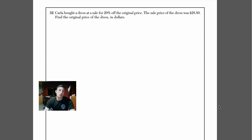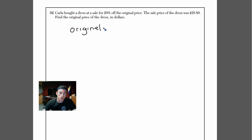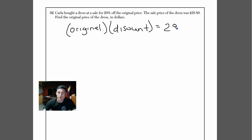Number 32 says: Parla bought a dress at a sale for 20% off the original price. The sale price of the dress was $28.80. Find the original price. This one is a bit different because the discount was already applied and now we have to find the original price. We can write it as: original price times the discount equals the sales price, which is $28.80.